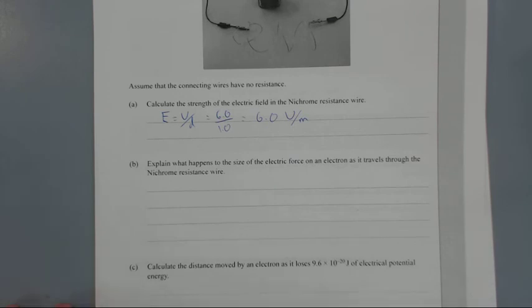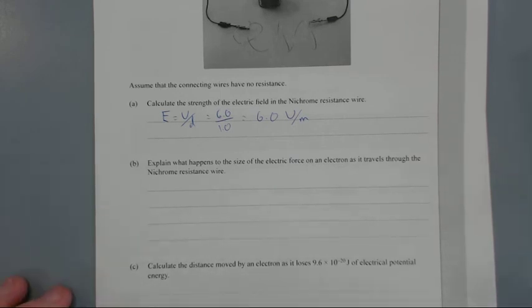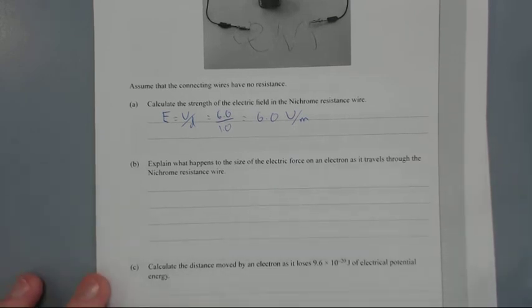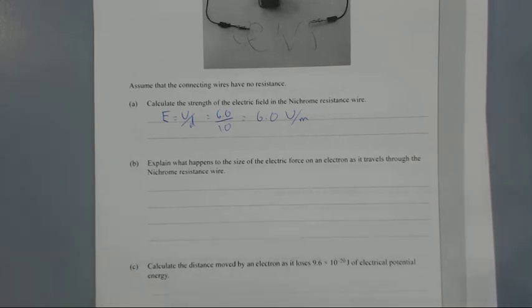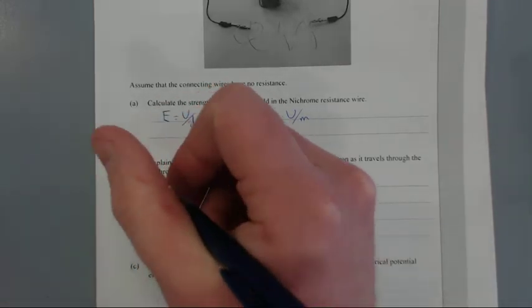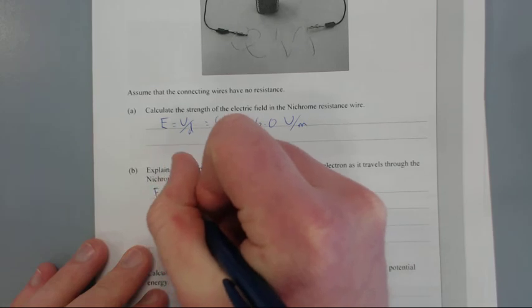Part B: Explain what happens to the size of electric force on an electron as it travels through the nichrome resistance wire. The formula for electric force on your formula sheet is force equals E times Q.